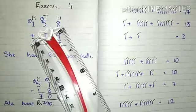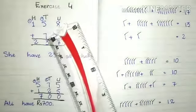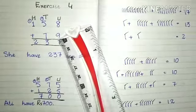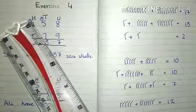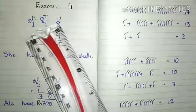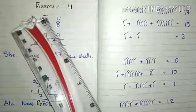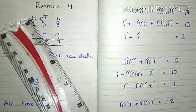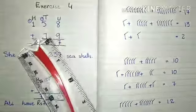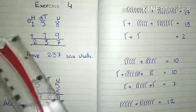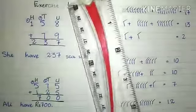So we will write firstly these numbers vertically then we will add. 158 we will write and then down we will write 79, but according to their place values means unit, tens and hundreds. 8 is at unit place, 5 is at tens place and 1 is at hundreds place. In the same way, 9 is at unit place and 7 is at tens place.